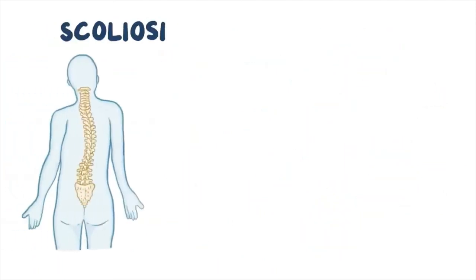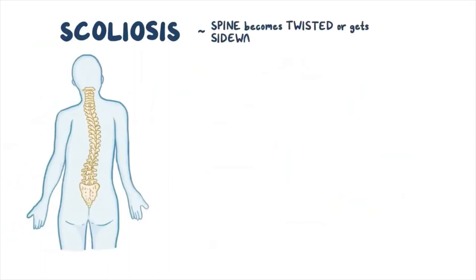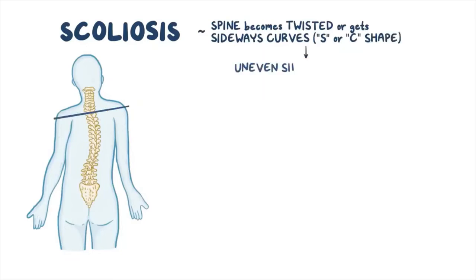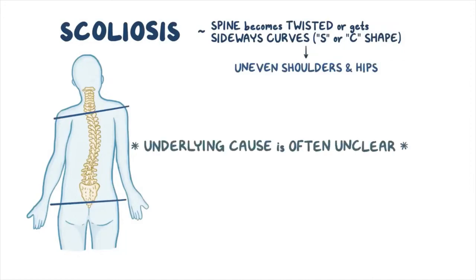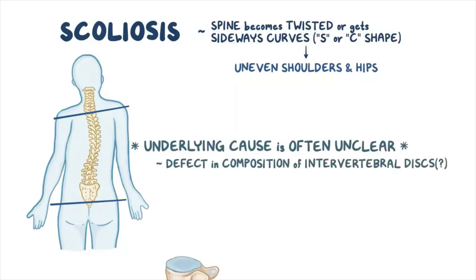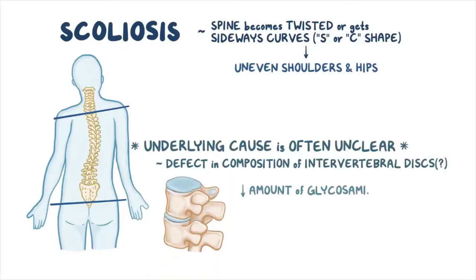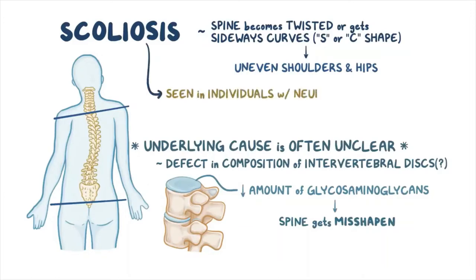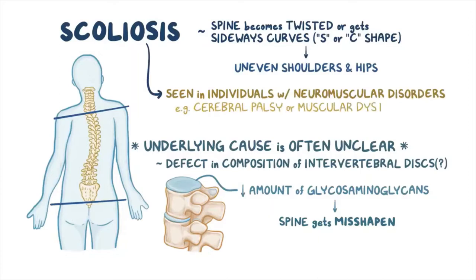Scoliosis is when the spine becomes twisted or develops a sideways curve resembling an S or C shape, often resulting in uneven shoulders and hips. The underlying cause is usually unclear — thought to be a defect in intervertebral disc composition, specifically a reduced amount of glycosaminoglycans, which changes their ability to act as shock absorbers and causes the spine to become misshapen. Scoliosis is often seen in individuals with neuromuscular disorders like cerebral palsy or muscular dystrophy.